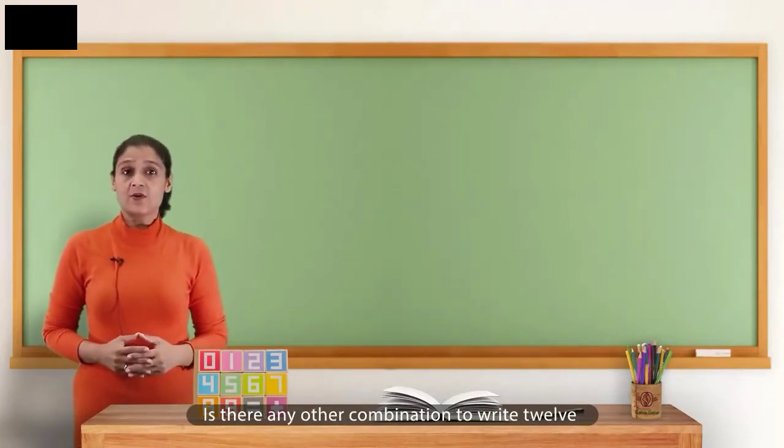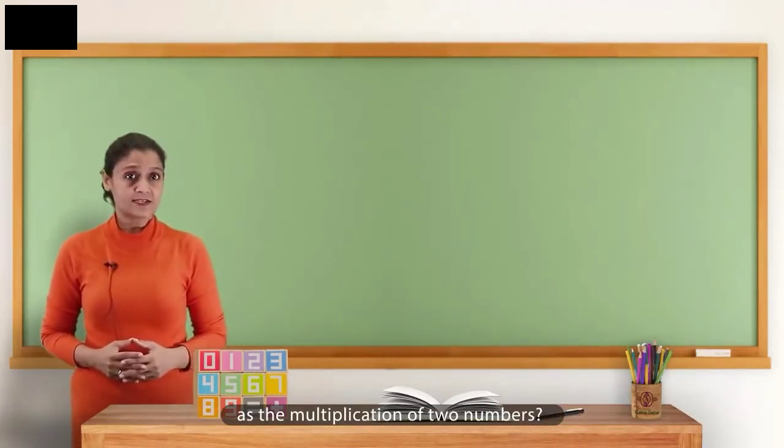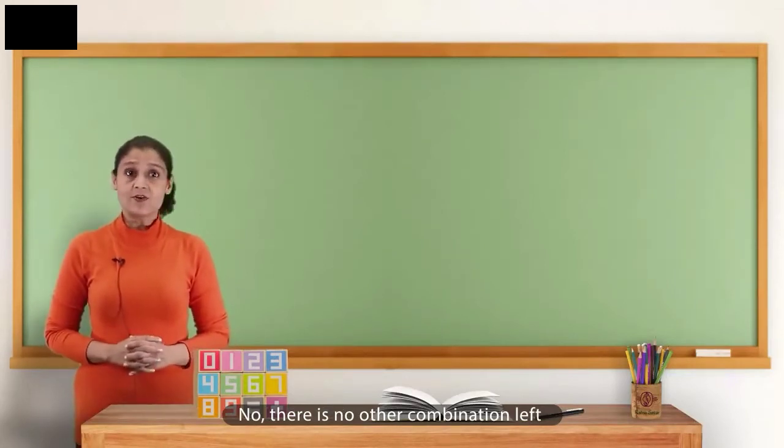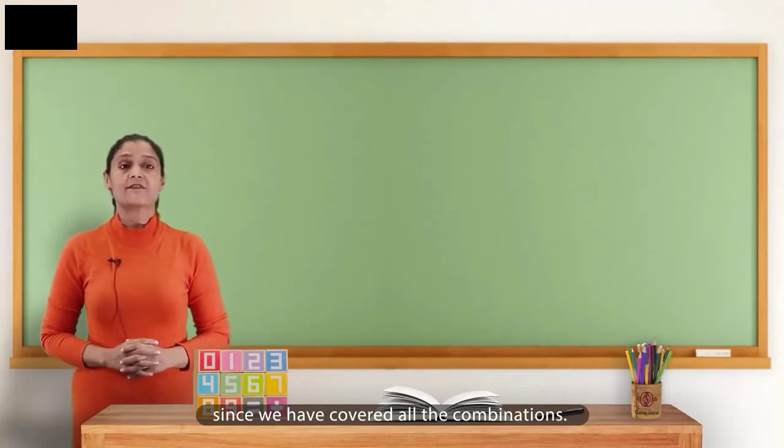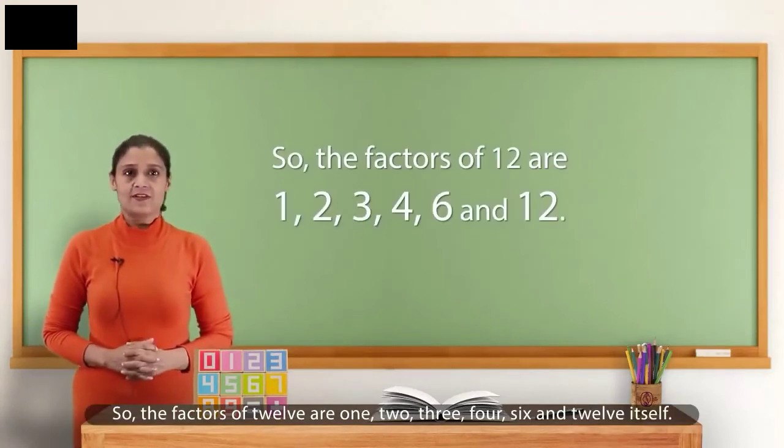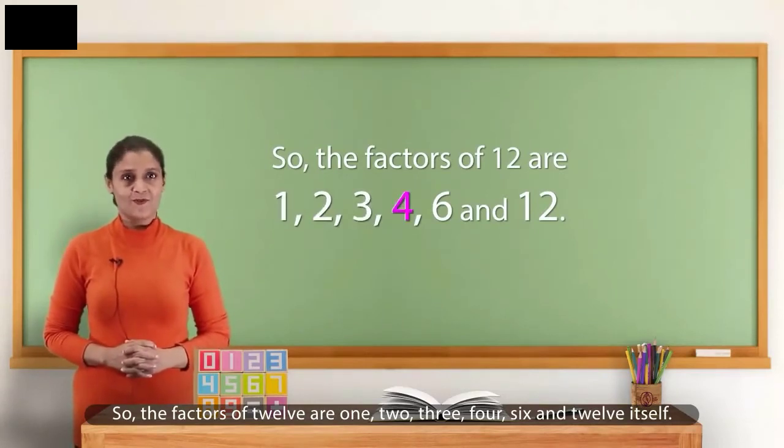Is there any other combination to write 12 as the multiplication of two numbers? No, there is no other combination left since we have covered all the combinations. So, the factors of 12 are 1, 2, 3, 4, 6 and 12 itself.